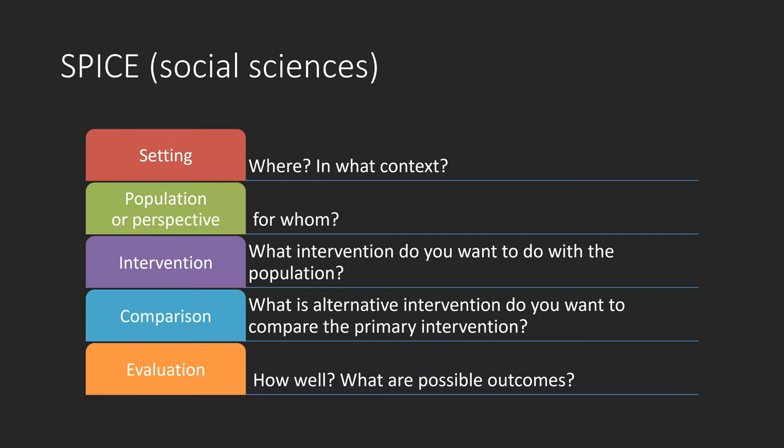The SPICE framework is often used in social sciences, especially for qualitative studies. SPICE stands for setting, population or perspective — for whom; intervention — what interventions do you want to do with the population; comparison — what is the alternative intervention, do you want to compare the primary intervention; and evaluation — how, where, and what are the possible outcomes?